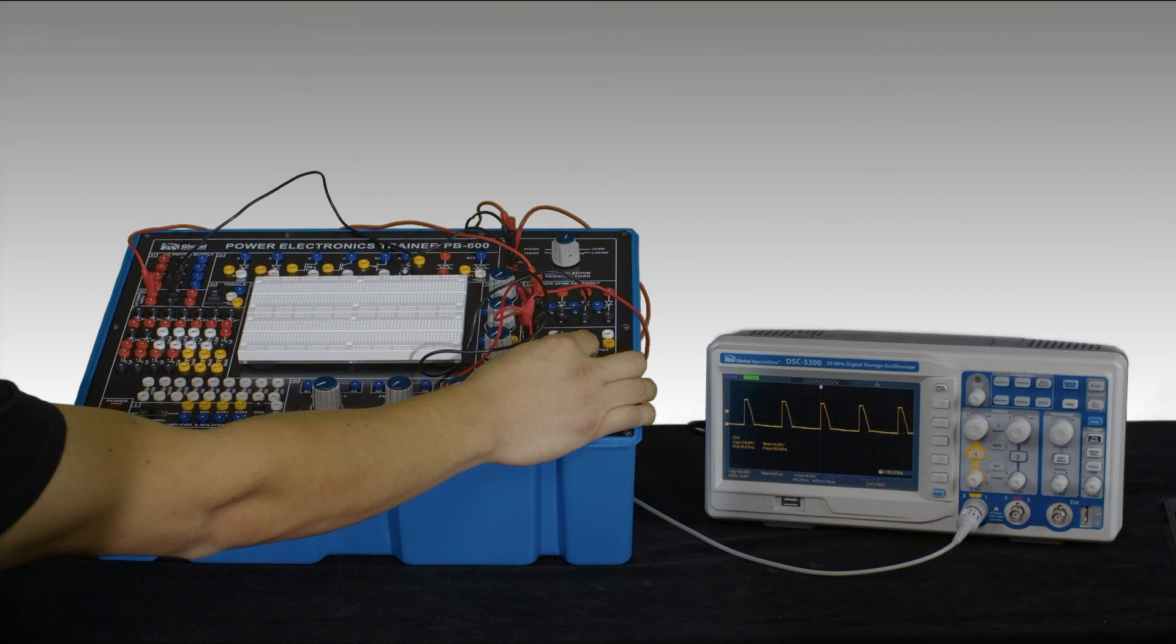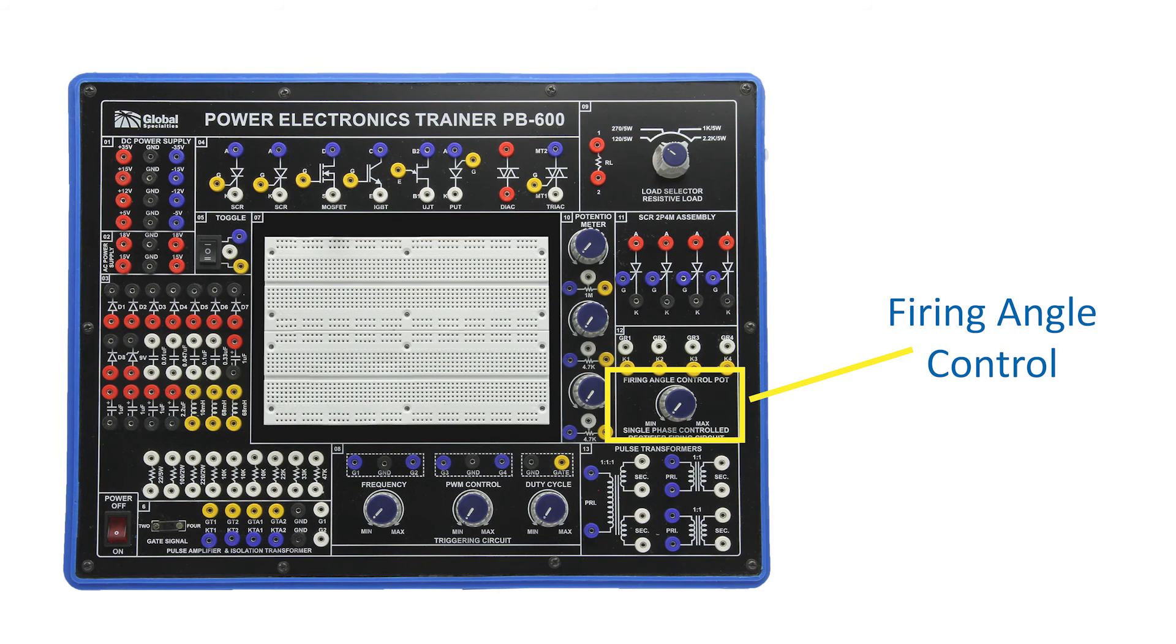The control goes from 0 to 180 degrees. But at 180 degrees, the current flowing through the SCR is below the holding current, at which point the SCR just shuts off. That's what the control does. It allows you to adjust when the gate is triggered and the SCR is activated.